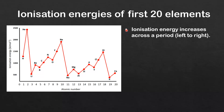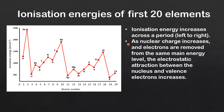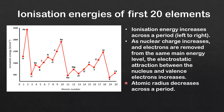Ionization energy increases across a period from left to right. As nuclear charge increases and electrons are removed from the same main energy level, the electrostatic attraction between the nucleus and the valence electrons increases. The second reason is that atomic radius decreases across a period.